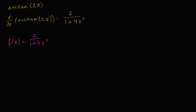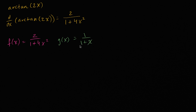Now, if we had another function that cleans things up so we don't get all this hairiness when we take the derivatives — let's say g of x equals 1 over 1 plus x, which is the same as 1 plus x to the negative 1 power. g of x is interesting because it's really easy to take its derivatives.